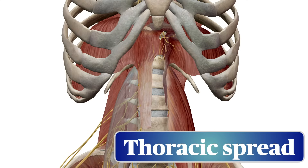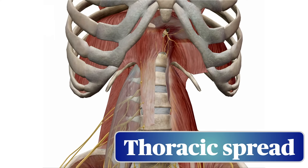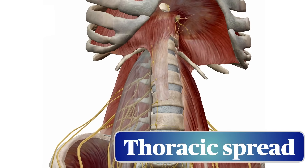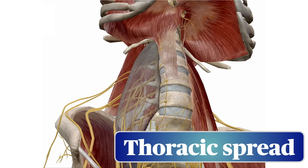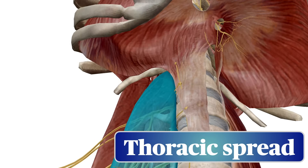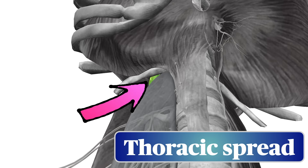One of the reasons for the success of the anterior QL is the fact that local anesthetic will travel in a cephalad direction and enter the paravertebral space of the lower thorax via the lumbocostal arch. Here we've made the psoas muscle slightly transparent and we can see the gap outlined in yellow. This facilitates blockade of the upper reaches of the abdomen and contributes to visceral analgesia following low thoracic sympathetic block.